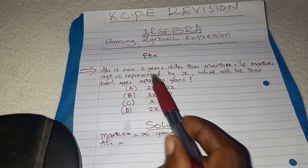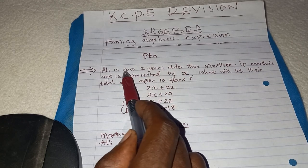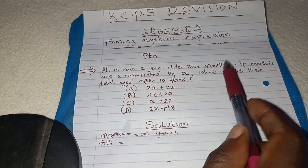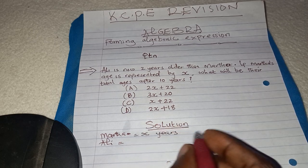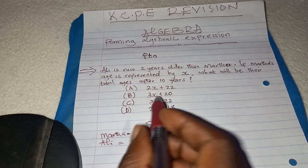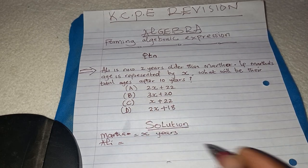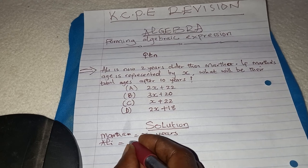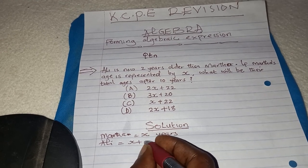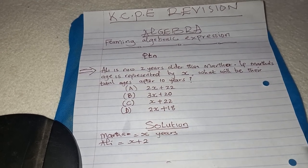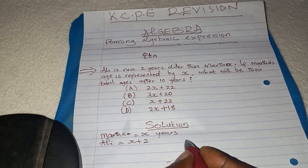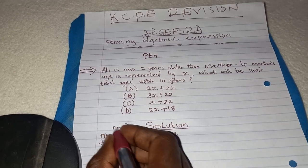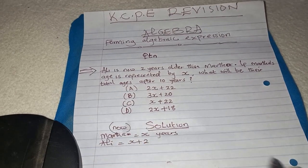For Ali, you are told Ali is two years older than mother now. So if he is two years older, he is going to be X plus 2. This is their age now.